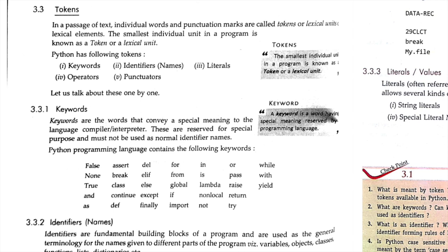Keywords are words that convey special meaning to the language compiler or interpreter. For example, if you type 'False', the compiler or interpreter will understand it has a special meaning — it is a keyword. Examples include: assert, None, True, as, if, for, while — these all are keywords with special meaning for the compiler or interpreter.